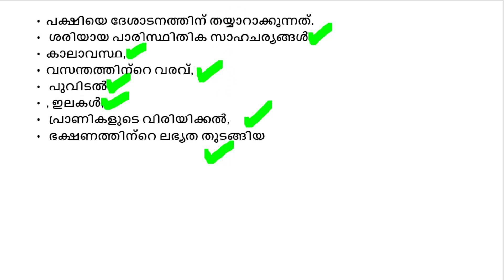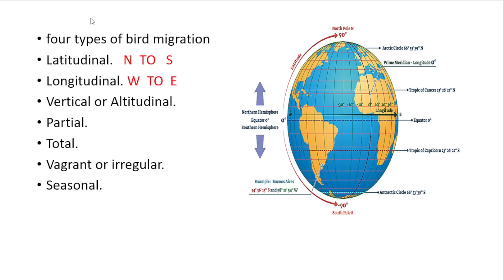We will research different types of migrations about bird migrations: Latitudinal Migration, Longitudinal Migration, Vertical Migration, Partial Migration, Total Migration, Vagrant or Irregular Migration, and Seasonal Migration.